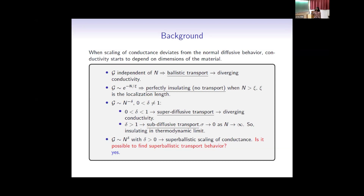Conductance can also follow a power-law decay like N to the power minus delta — this is anomalous transport. If delta is between 0 and 1, this is superdiffusive transport, where conductivity also diverges — a conducting phase. If delta is greater than 1, this is subdiffusive transport, and in the thermodynamic limit the conductivity is actually zero.